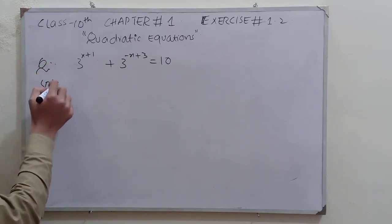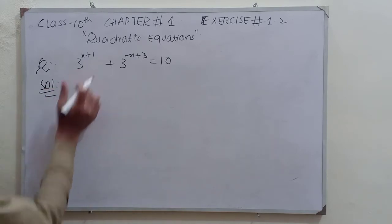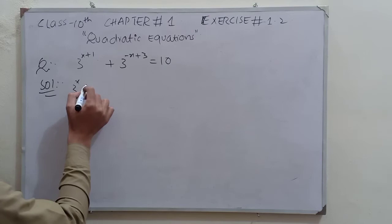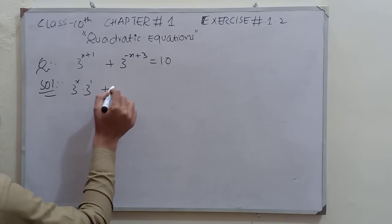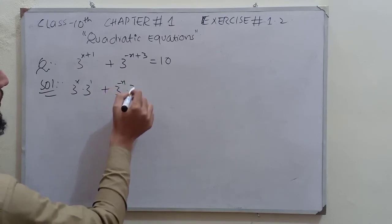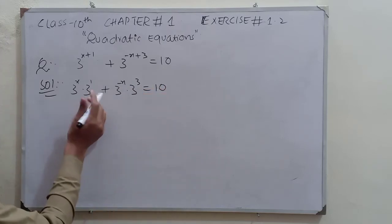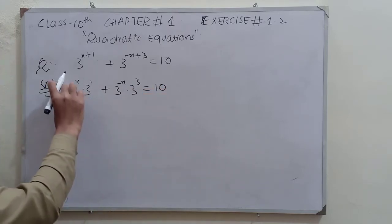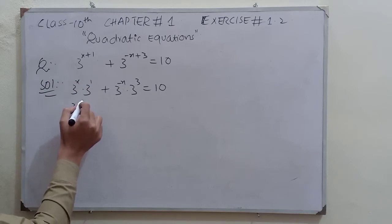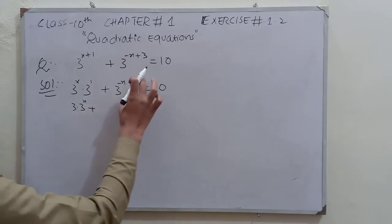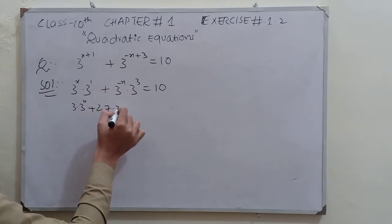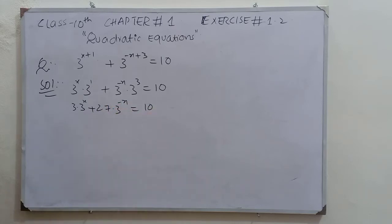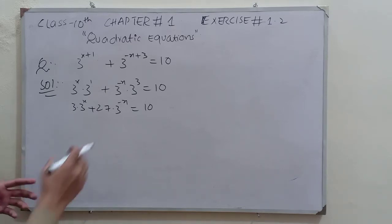We can write 3^(x+1) as 3^x · 3^1 by applying the exponent property. Similarly 3^(-x+3) becomes 3^(-x) · 3^3. So 3 becomes the coefficient of 3^x, and 3³ equals 27 becomes the coefficient of 3^(-x). The equation becomes 3·3^x plus 27·3^(-x) equals 10.